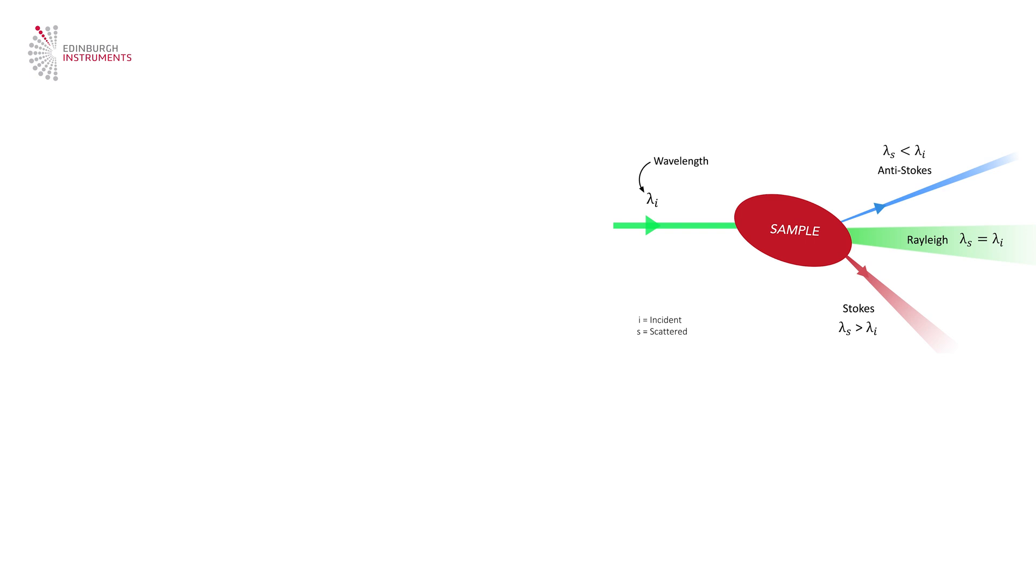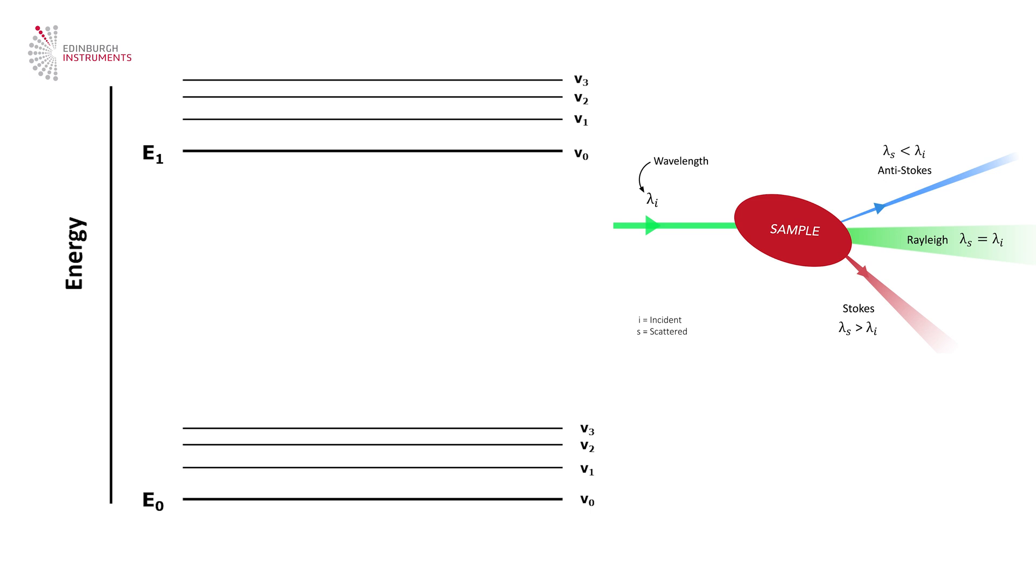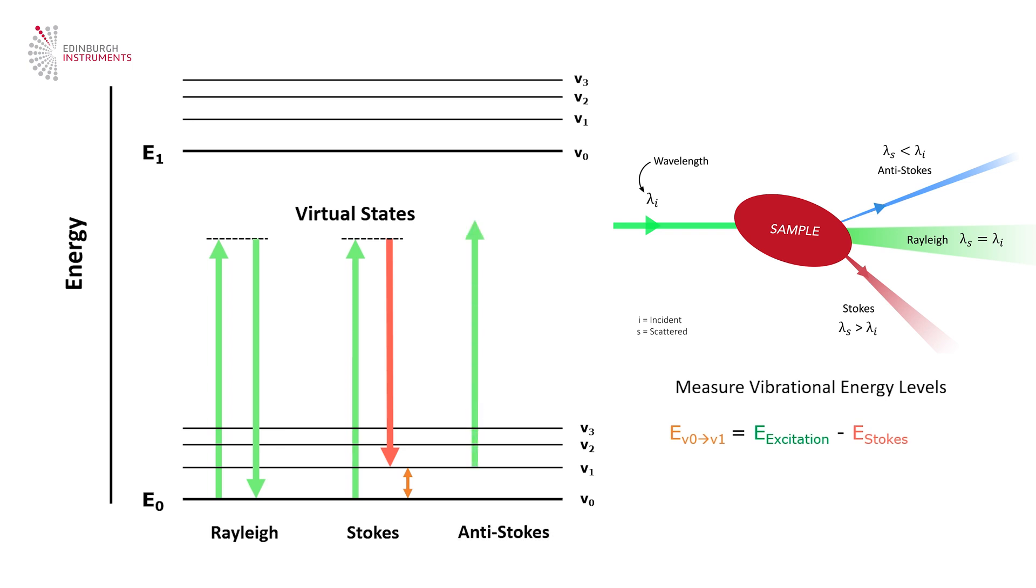These shifts can be visualized in a Jablonski diagram. In Rayleigh scattering, the energy of the scattered light is the same as the incident light. In Raman stokes scattering, the molecule starts in a low energy vibrational state, is raised to a virtual state, and scatters light with a lower energy. In anti-stokes scattering, the molecule starts in a high energy vibration state, is raised to a virtual state, and scatters light with a higher energy.